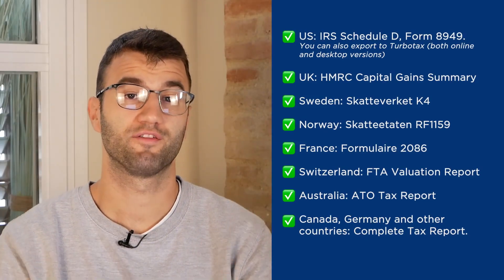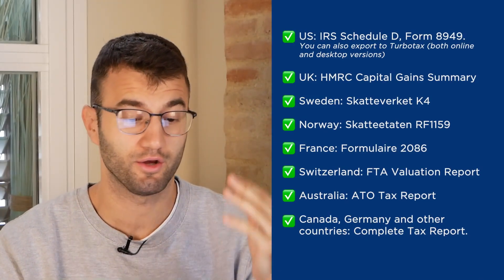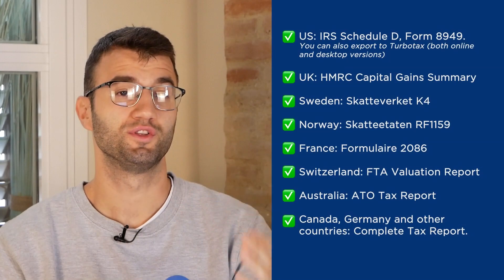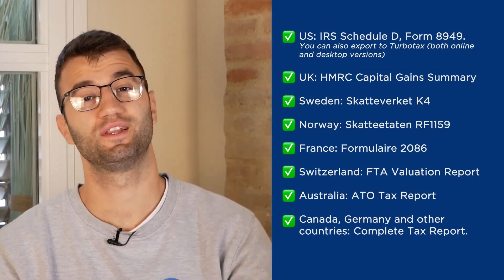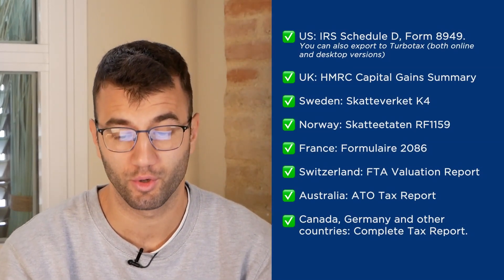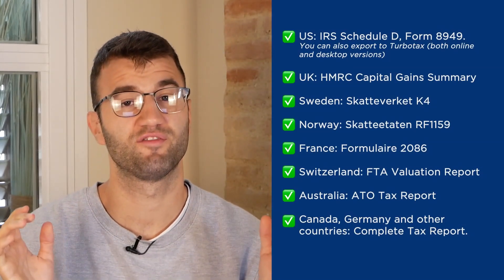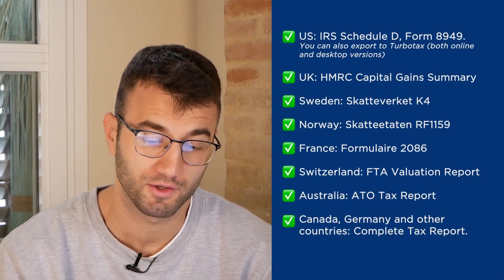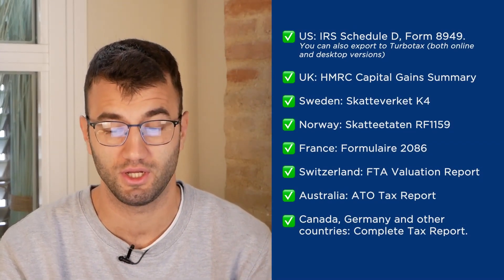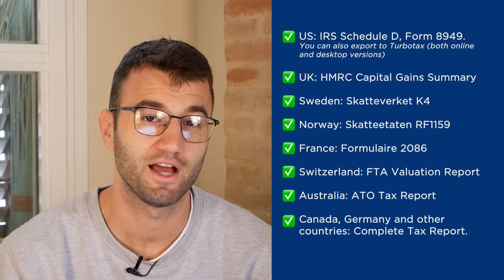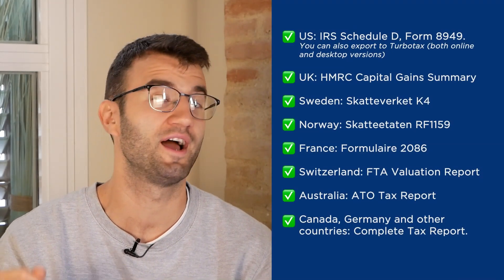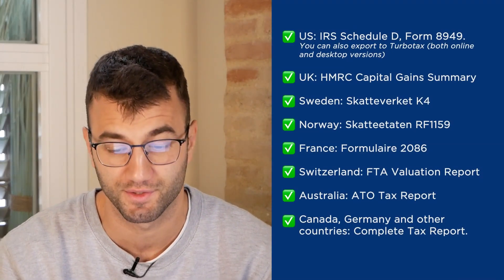Once you're happy with everything you see — your capital gains, your income, your costs and expenses — scroll on down and select a tax report appropriate for your needs. We have plenty of different documentation to offer. For the U.S., we have the IRS Schedule D Form 8949. You can also export to TurboTax, both online and desktop versions.